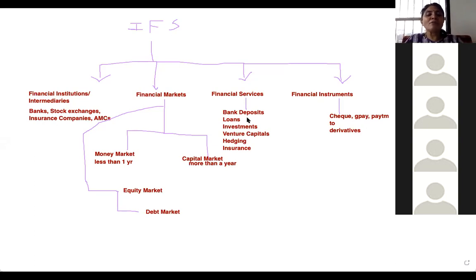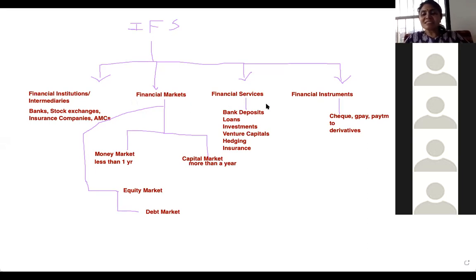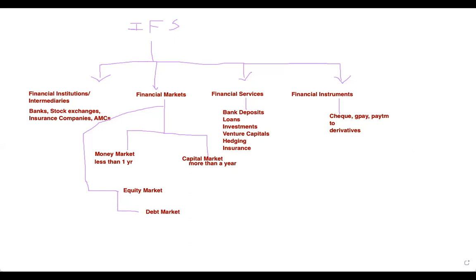Financial instruments are the acknowledgement given by financial institutions for financial services provided. From the simplest instrument — a cheque — the moment you open an account, you get a chequebook so you can make payments without carrying cash. G-Pay linked to your bank, Paytm — payments are debited from your bank account. Many more instruments exist.